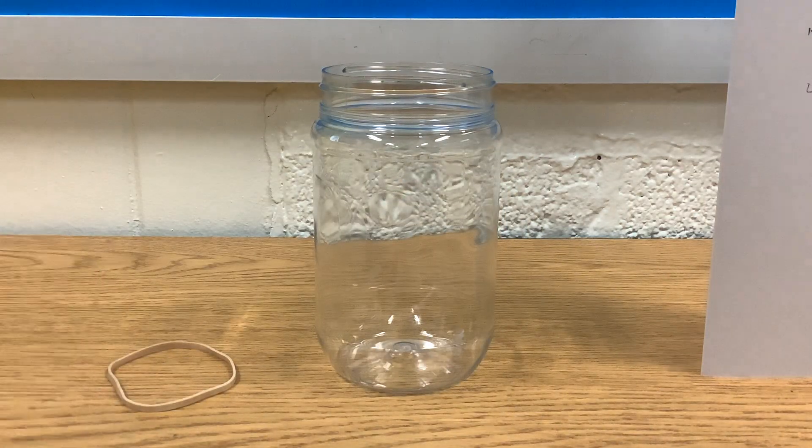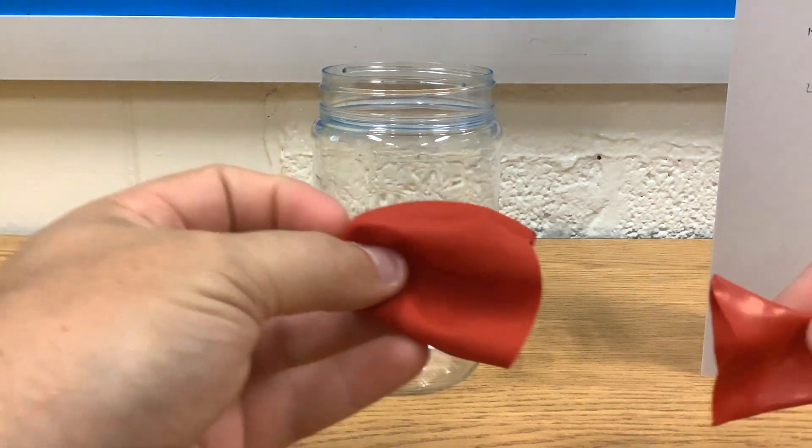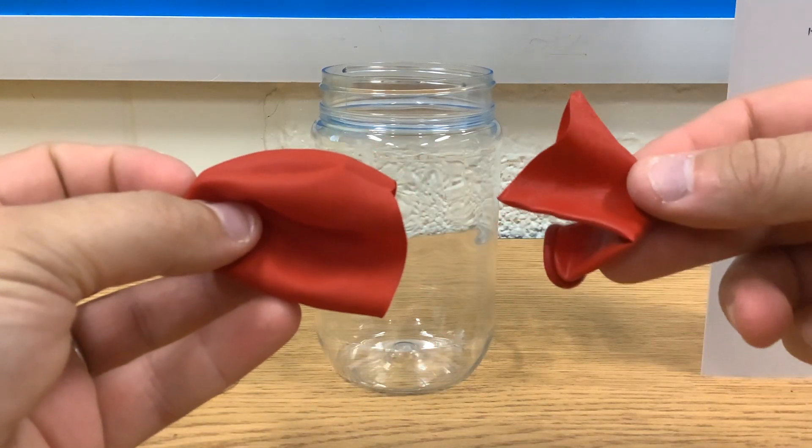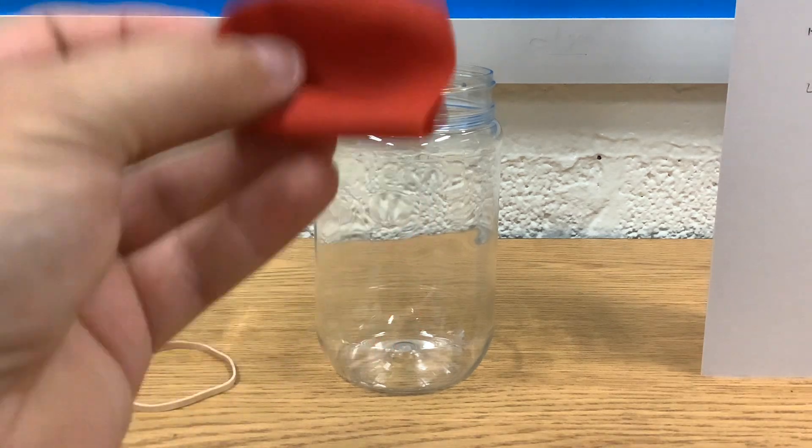Then you want a balloon. And what you're going to do with your balloon is you're going to take it, and here's your normal balloon, and you're going to cut it in half. So this part that you blow up, you just take it and you get rid of it. We're going to keep this part of our balloon.